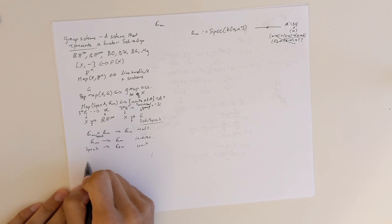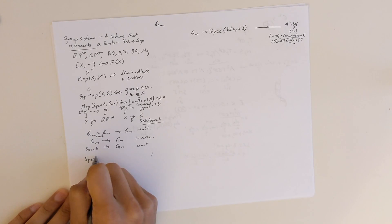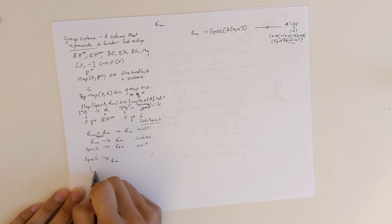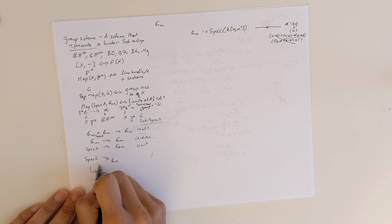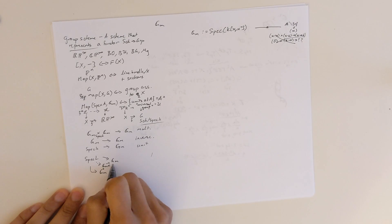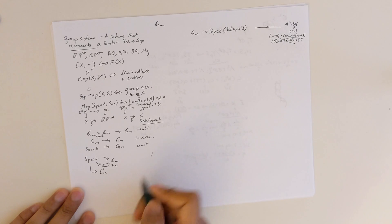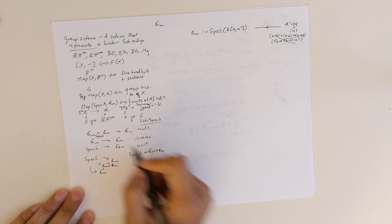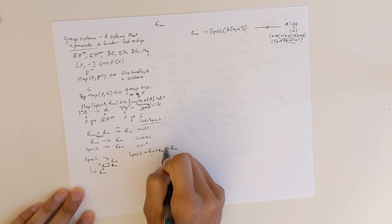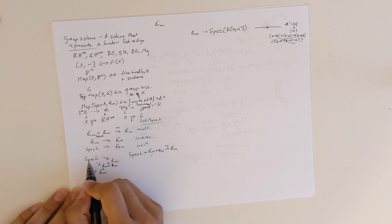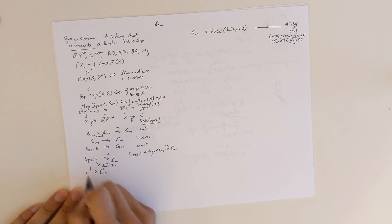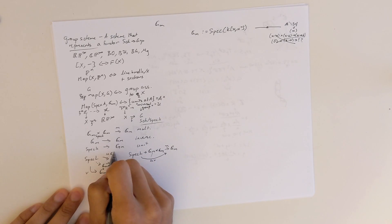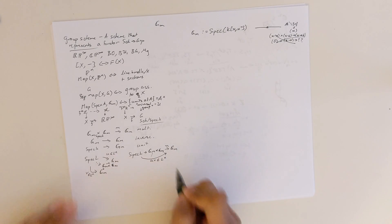If we have two maps from spec L — where L is a field — to G_m, we get an associated map to G_m cross G_m by universal properties, and then using the multiplication map m we get a map down to G_m. This should correspond to: one map corresponds to some unit u, the other to some unit v, and the composite map should correspond to the unit u times v in L-cross.